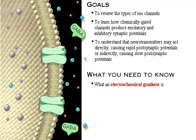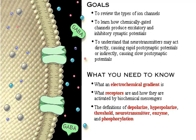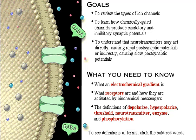Here's what you need to know: what an electrochemical gradient is, what receptors are and how they are activated by biochemical messengers, the definition of depolarize, hyperpolarize, threshold, neurotransmitter, enzyme, and phosphorylation. To see definitions of terms, click the bold red words.